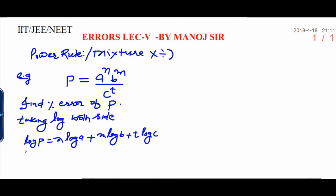Now, in order to get the relative percentage error, you need to differentiate it. Differentiate by operators that will be delta P upon P into 100 is equal to n delta a upon a into 100 plus m into delta b upon b into 100 plus t into delta c upon c into 100. This is the way how you get the percentage error of this quantity P.